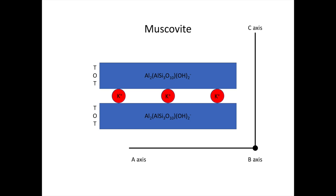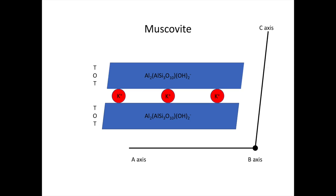The bonding within the TOT structural layers is much stronger than the potassium bonds that tie the layers together — this gives rise to the perfect cleavage we see in muscovite mica. Adding crystallographic axes to our schematic, there is a bonus complication: the bonding between the tetrahedral, octahedral, and tetrahedral layers in each TOT sheet doesn't fit perfectly. This mismatch can be accommodated in various ways, giving rise to polytypes. We're going with the most common polytype for muscovite: 2M1.